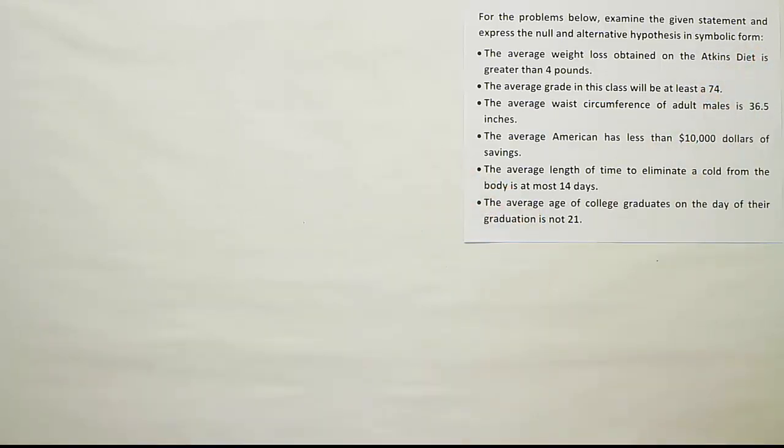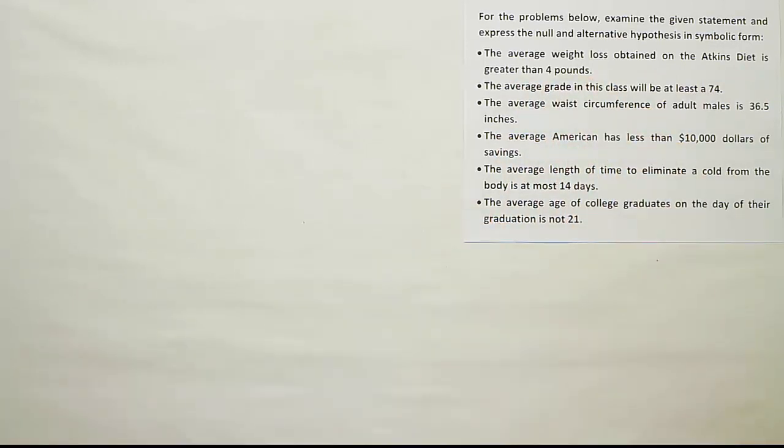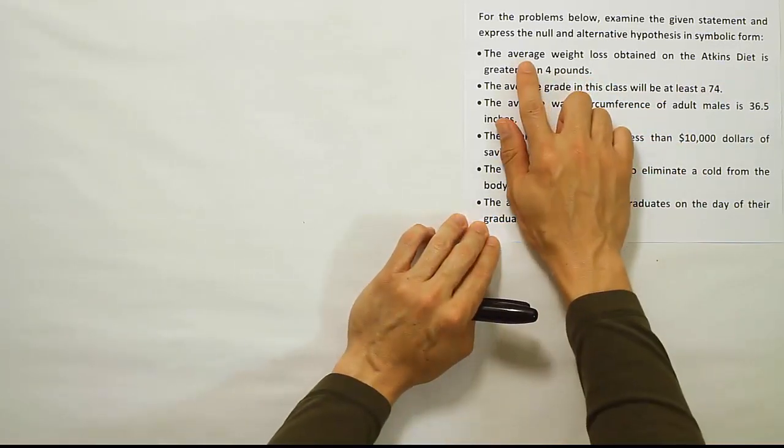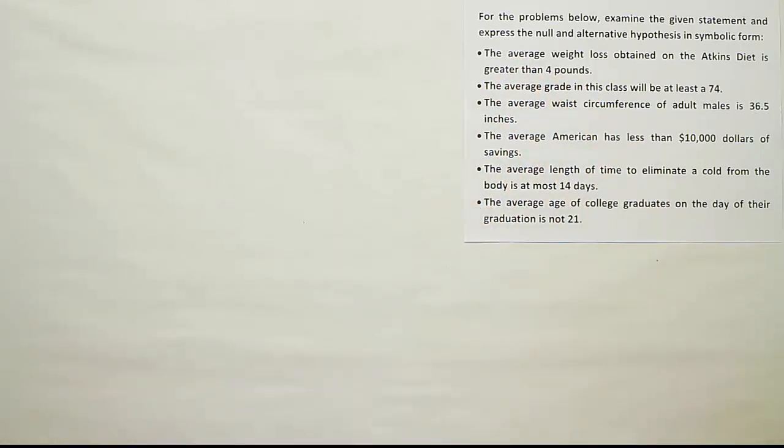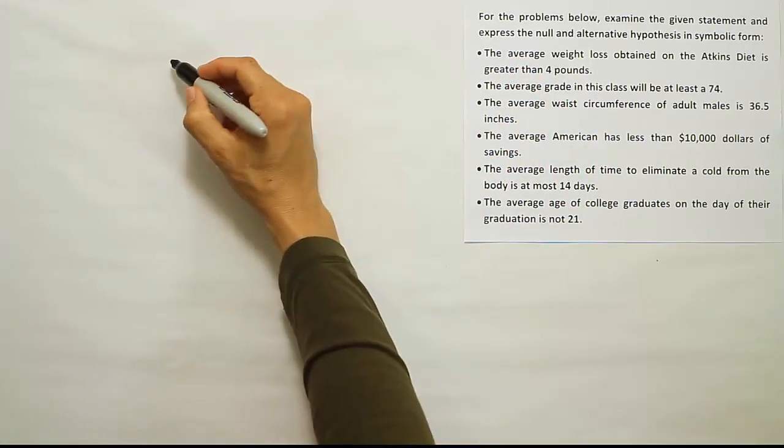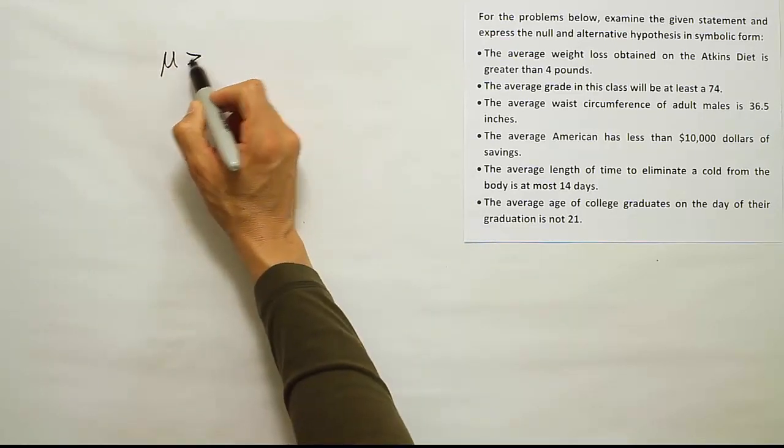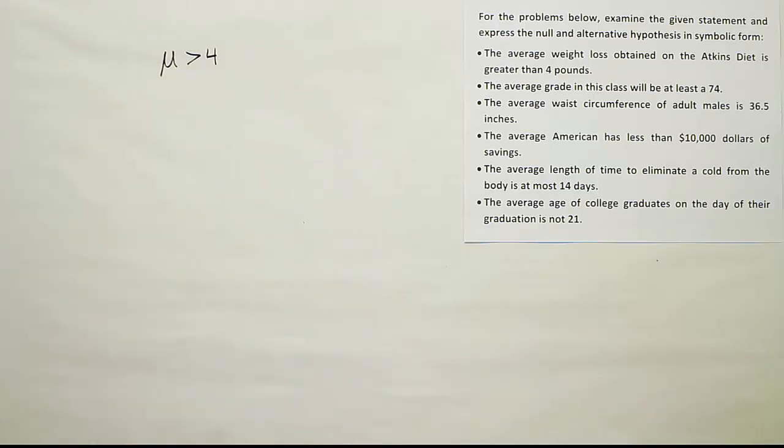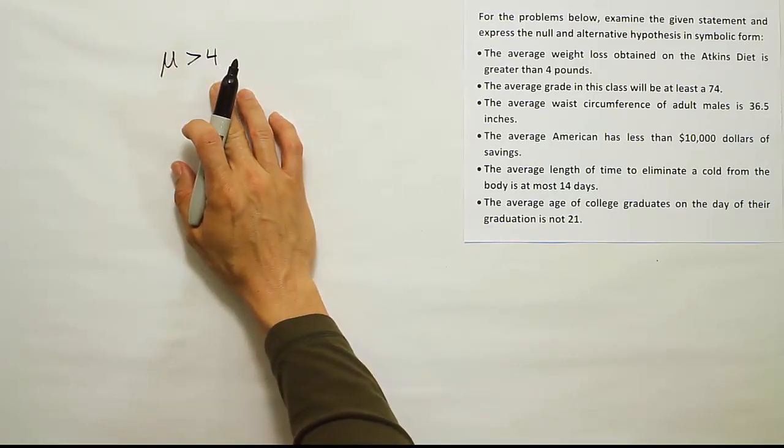Let's start with the first one. It says the average weight loss obtained on the Atkins diet is greater than four pounds. So this is a claim about the average and we want to say that it's greater than four pounds. The symbol for average is mu, and we want to say greater than four pounds. So this is our first bullet here - the claim is that the mean is greater than four pounds.